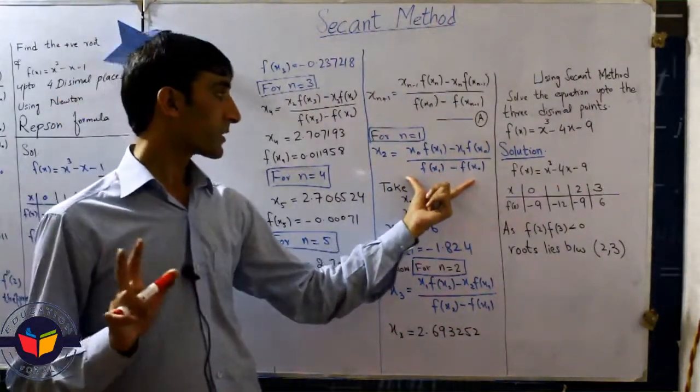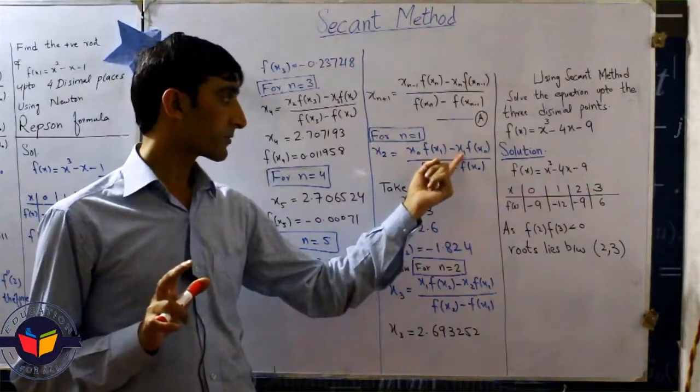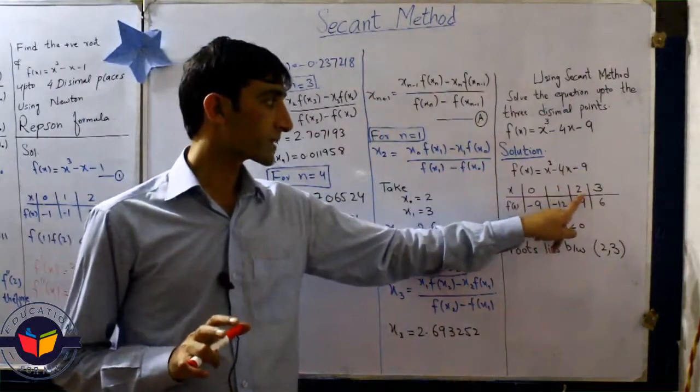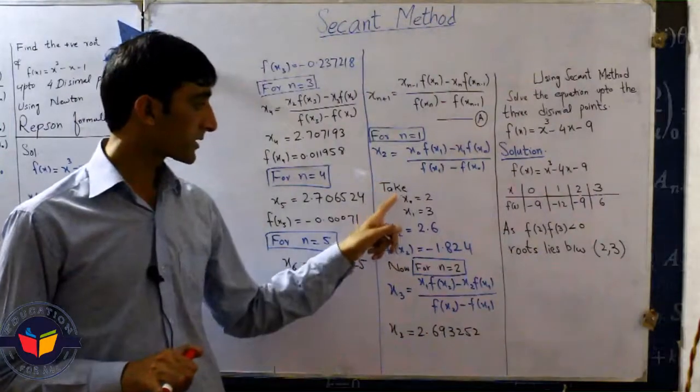Now students we need two values that is x0 and x1. Here, 2 is x0 and 3 is x1.